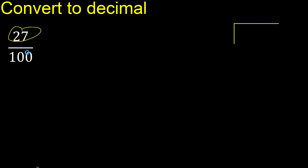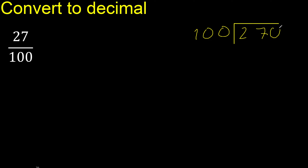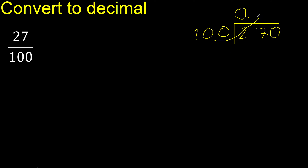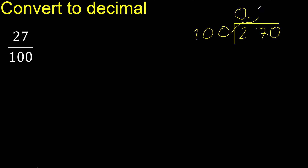27 divided by 100. Since 27 is less than 100, we complete with 0 and place the decimal point. 100 multiplied by which number is nearest to 270 but not greater? 100 multiplied by 3 is 300, so multiplied by 2 is 200.